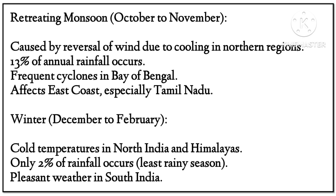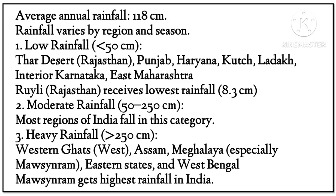Winter (December to February): coldest temperatures occur in north India and the Himalayas. Only 2% of rainfall occurs, making it the least rainy season. South India experiences pleasant weather during this season.